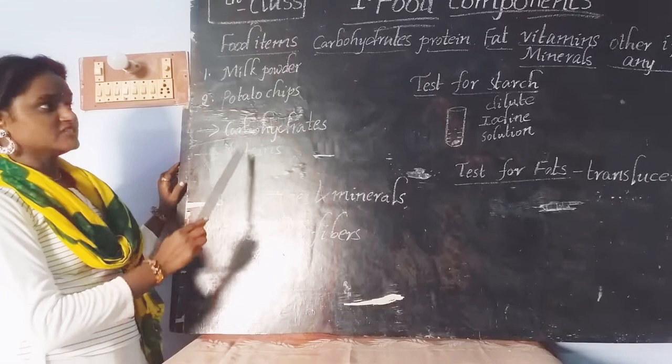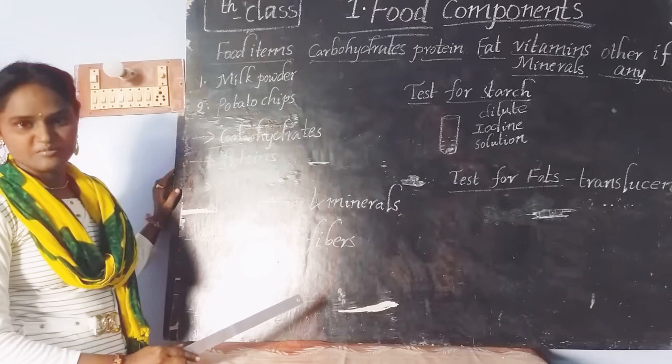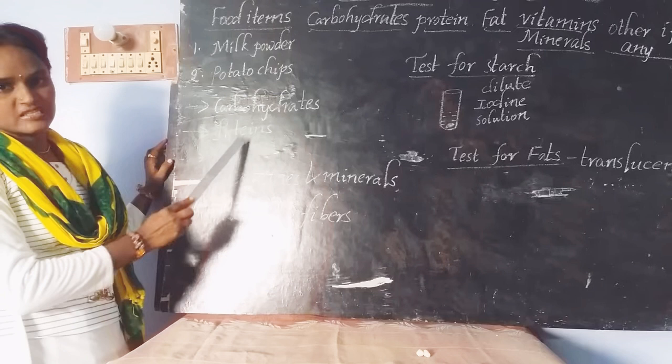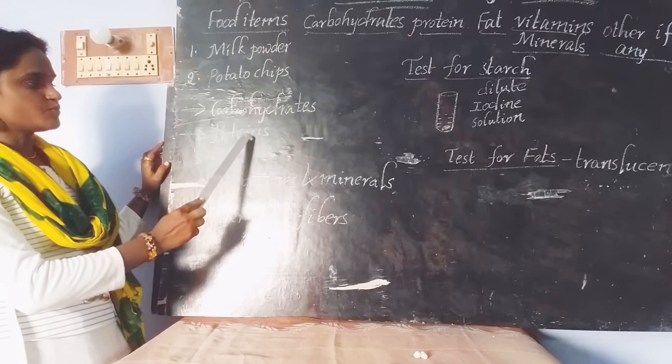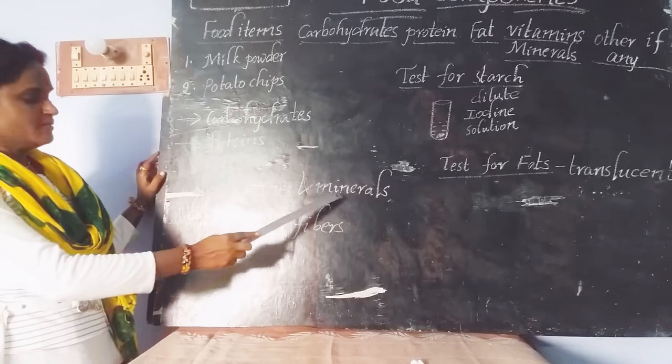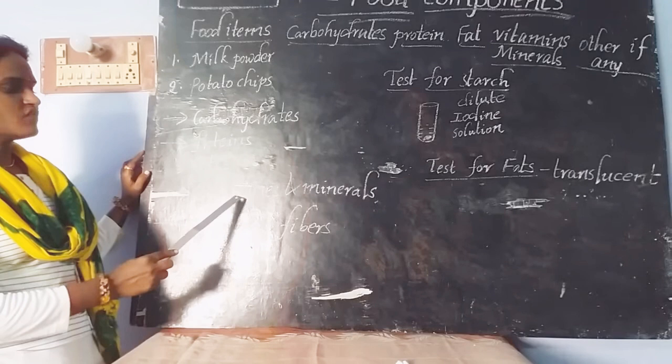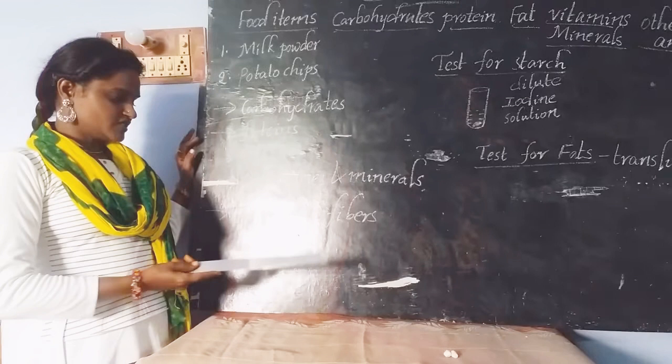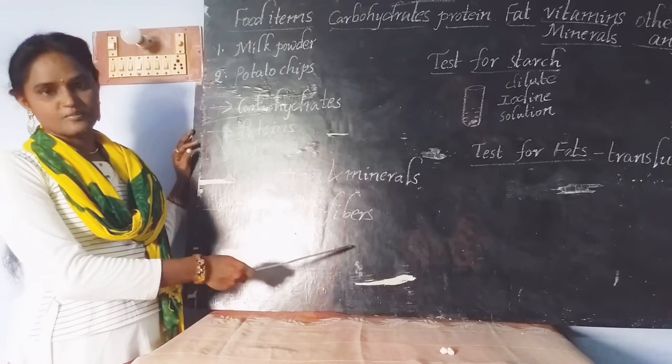The components present in food are: the first one is carbohydrates — you are well familiar with carbohydrates. The next one is proteins, then fats, then vitamins and minerals. Along with carbohydrates, proteins, fats, vitamins and minerals, food also contains some other important components — that is water and fibers.